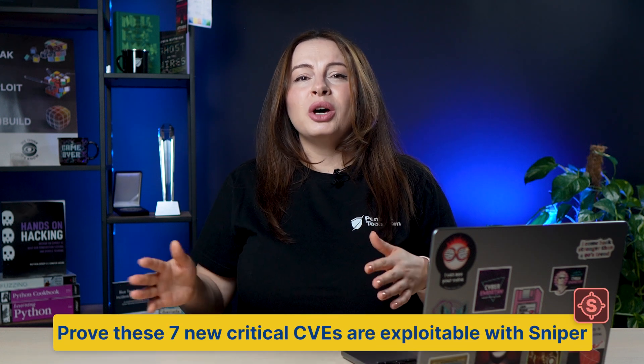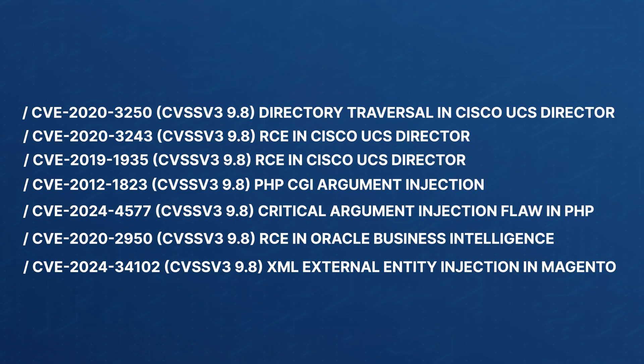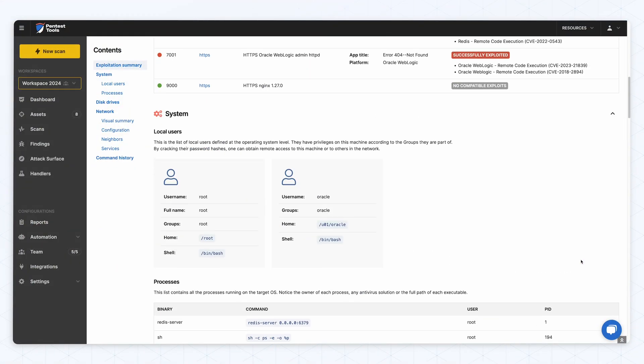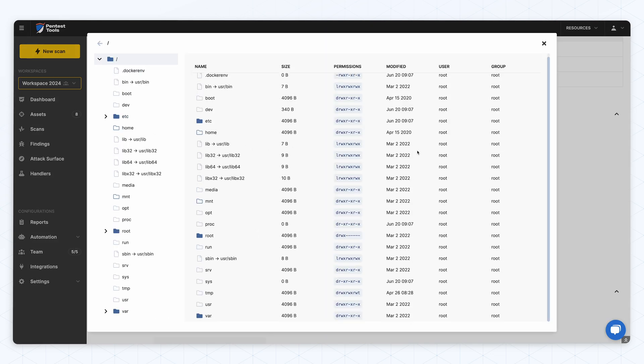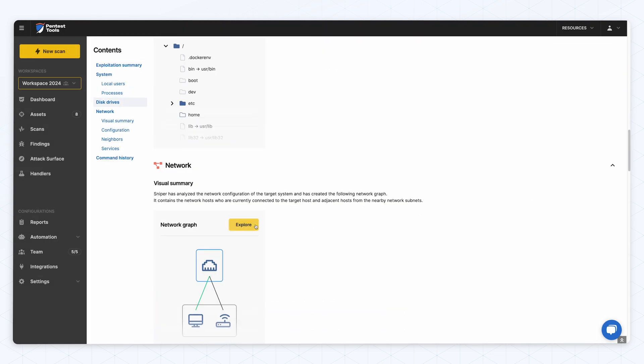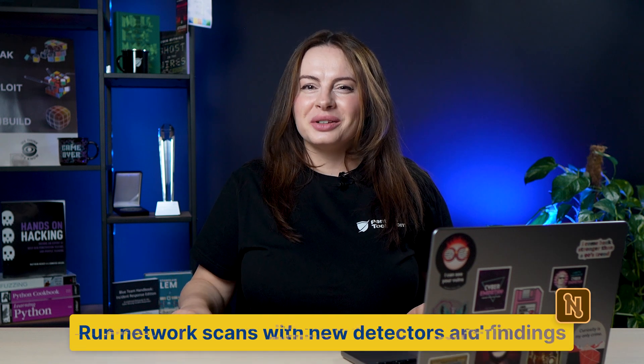Need to prove your targets are not just vulnerable, but actually exploitable through one of these critical CVEs? Sniper Auto-Exploiter got new modules for high-impact vulnerabilities in Cisco, PHP, Oracle, and Magento components. You can use Sniper to simulate attacks in a safe, controlled sequence and automatically get solid proof of compromise, along with the visualization of the target's network configuration, highlighted exploit paths, and more in-depth data.